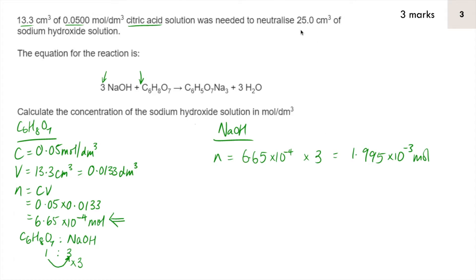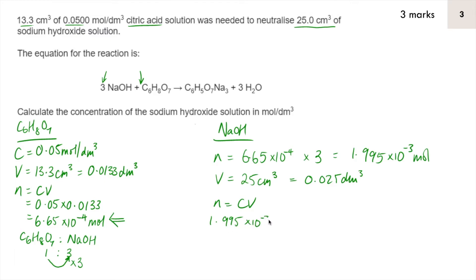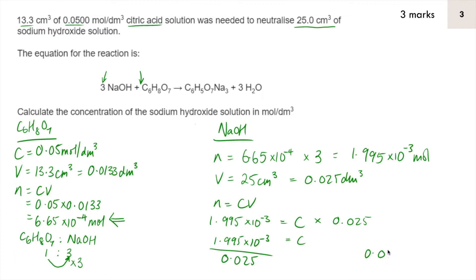Going back to the top of the question: 25 cm³ of sodium hydroxide was used, so V equals 25 cm³, converted to 0.025 dm³. Using moles equals concentration times volume and rearranging: concentration equals moles divided by volume. So concentration equals 1.995 × 10⁻³ divided by 0.025, which comes out as 0.0798 mol/dm³.